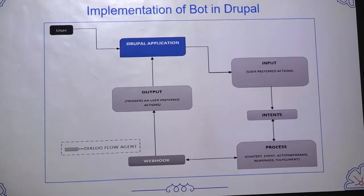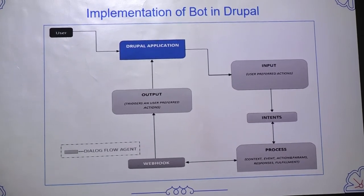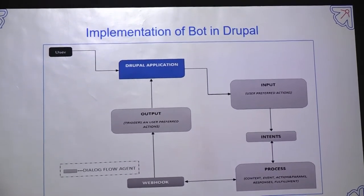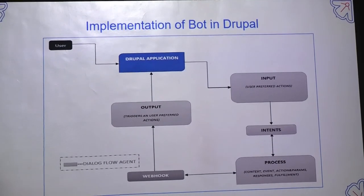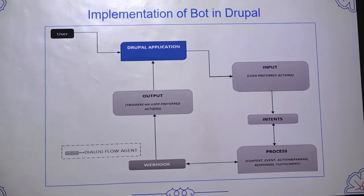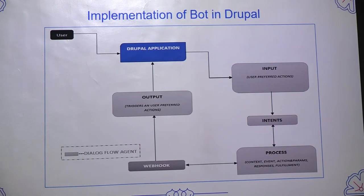These are the implementations of the bot with Drupal. In the Drupal application, a user can provide an input - user-based preferred utterances or actions - and then intents. Intents are just user intention words. The process is the Dialogflow process pipeline - context, events, actions and params, responses and fulfillment. Then we can integrate with webhook responses, and webhook responses trigger the event in the Drupal application. We implemented it in the process flow - we have not yet implemented the webhook integration.